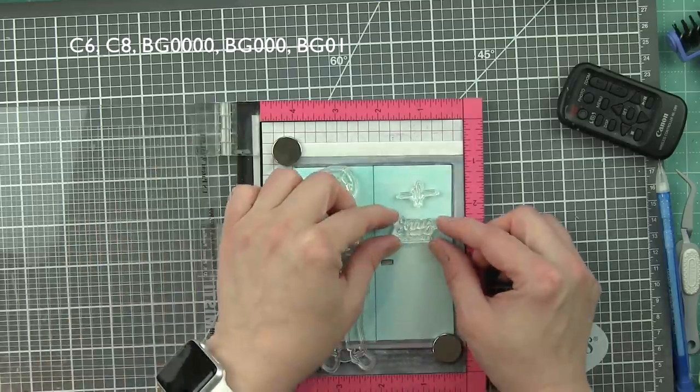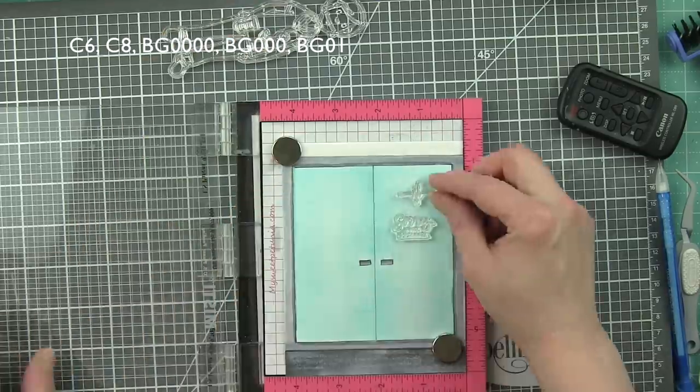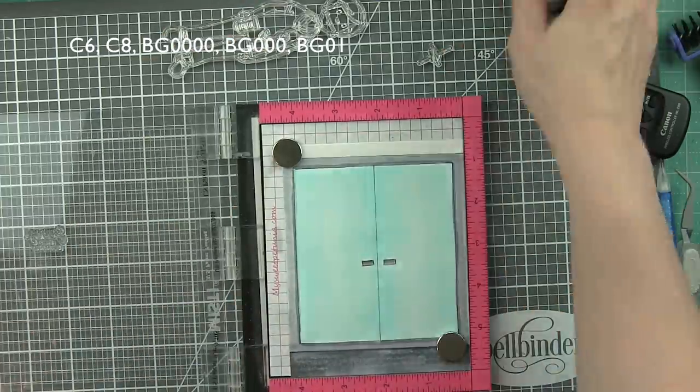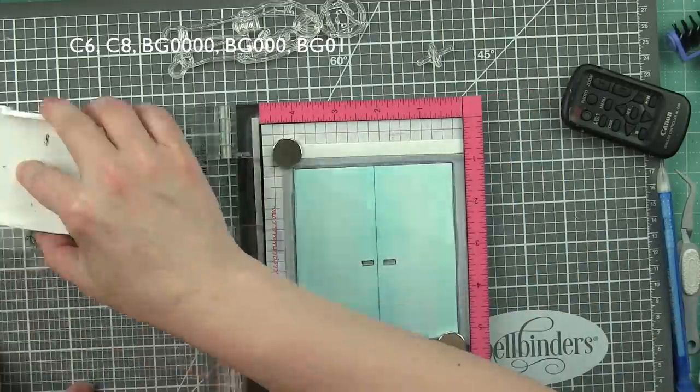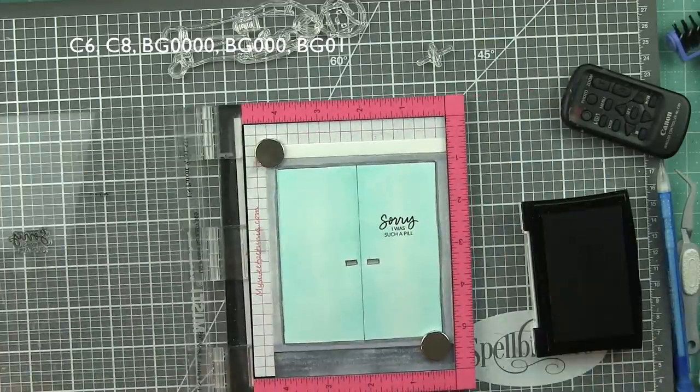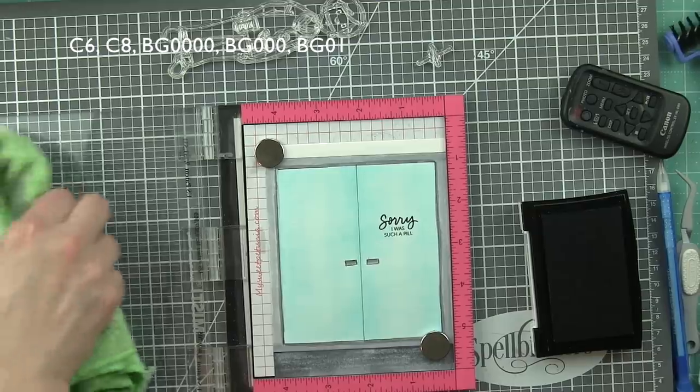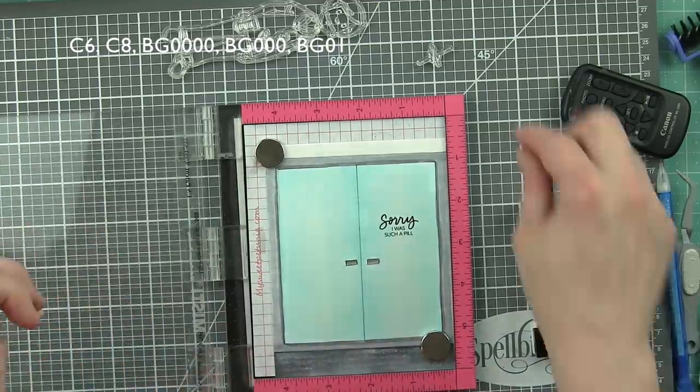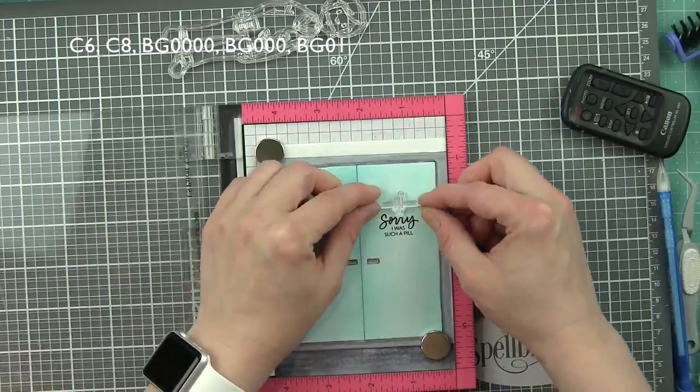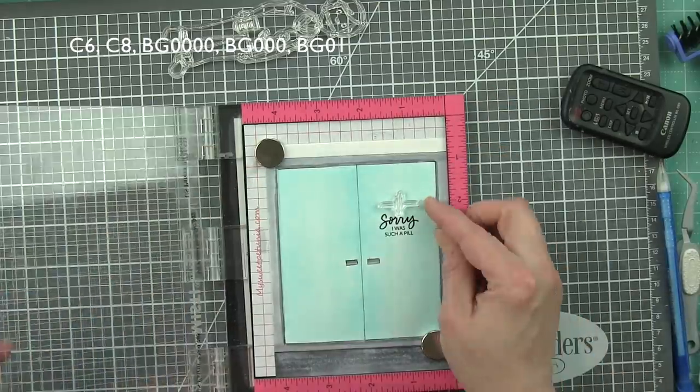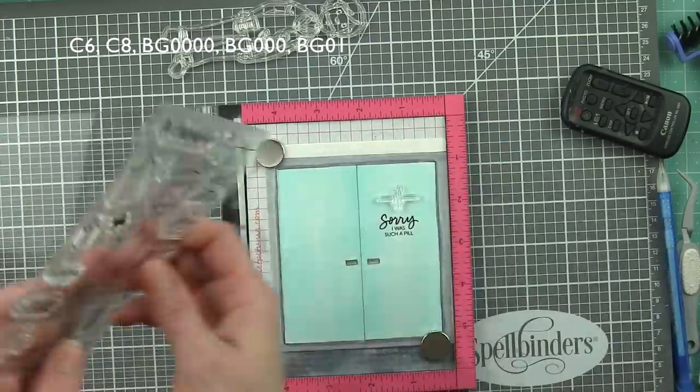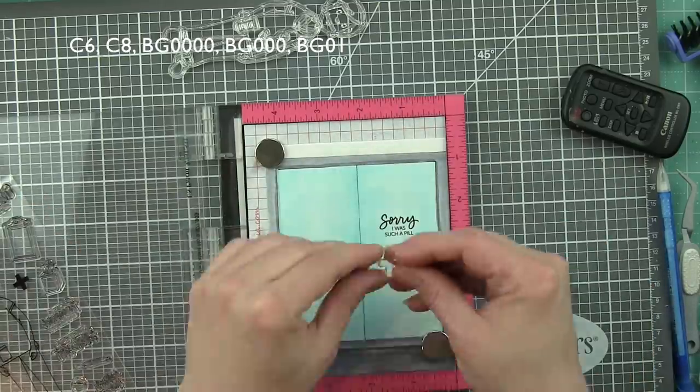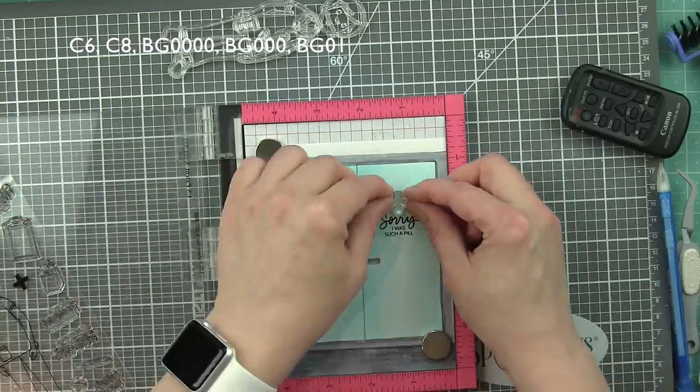And I decided to use 'Sorry I Was Such a Pill.' And I tried to use the little heartbeat stamp and it wasn't working. So let's stamp the sentiment first with some black ink. And I decided to use the little cross from the medical lady stamp set instead. And I like how prominent it is and how much it stands out on those medical facility doors. This is going to look much, much better.